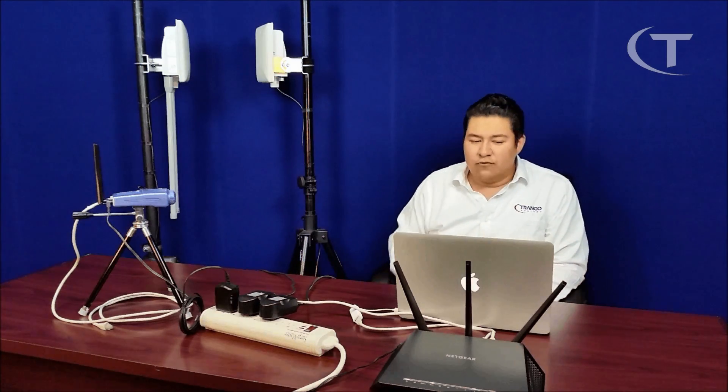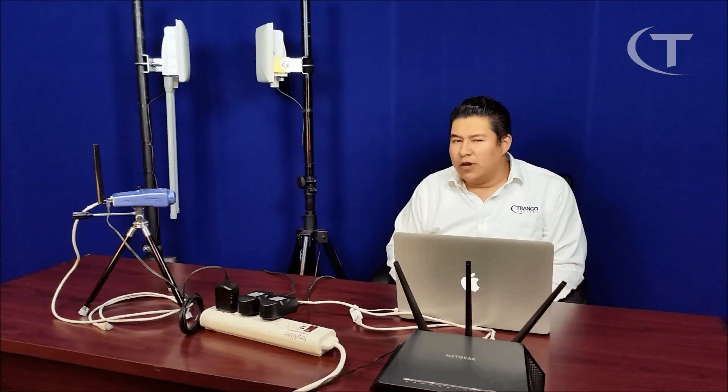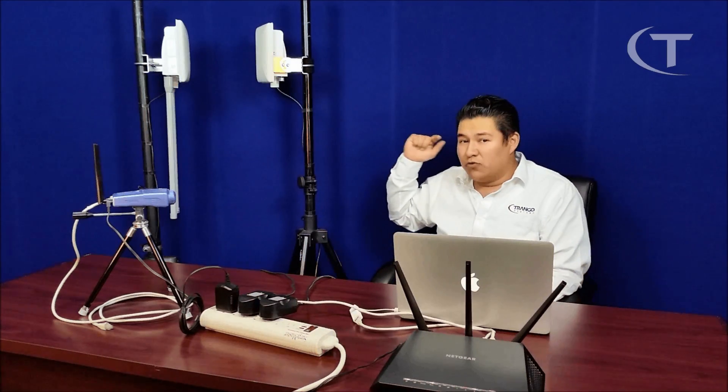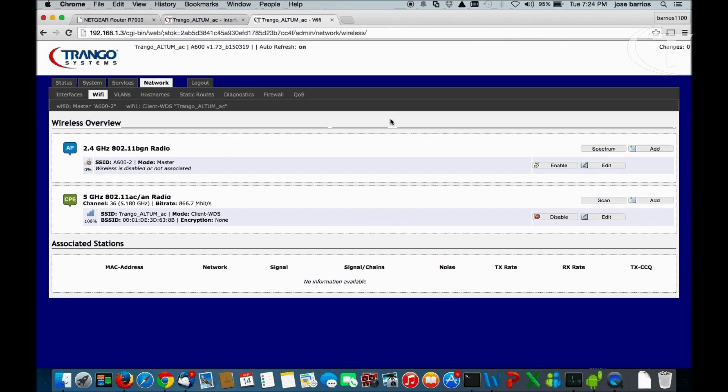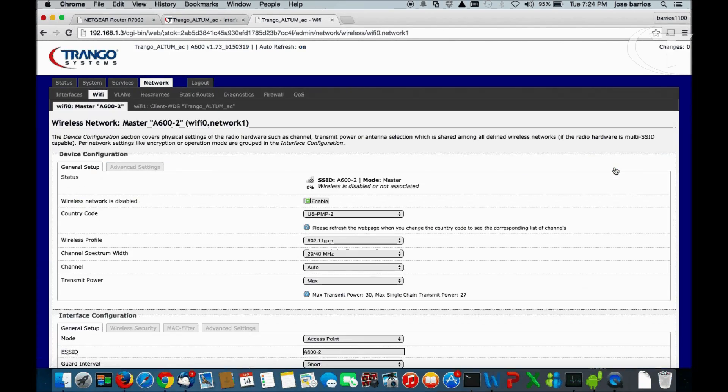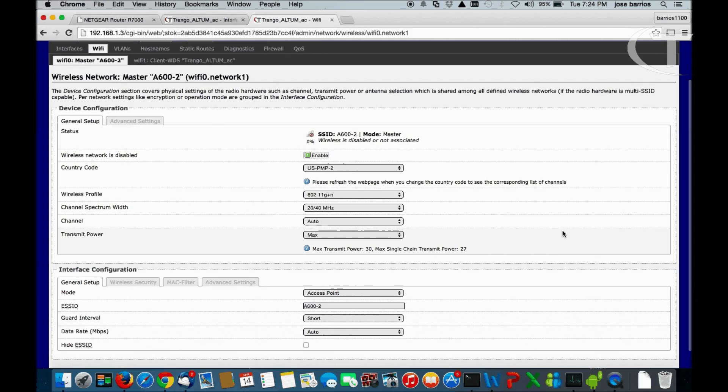In the Wi-Fi section, we have two radios. The 5 gigahertz radio, which is the backhaul radio going back to our main building, and we have the 2.4 Wi-Fi radio. This right now is disabled. I'm going to change that today. In this section, we have wireless network is disabled. We're going to keep it disabled until we change all the settings we want.